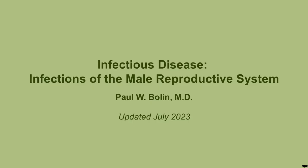We are going to talk about infections of the male reproductive system. This commonly gets overlooked because we often think of the female reproductive system, and things like pelvic inflammatory disease are certainly more tested and more common. But it is important to consider some of these infections because they do come up, and in the clinic it's important to know this — we don't want to neglect half the population.